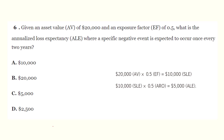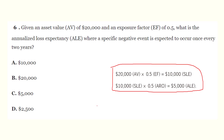Question 6: Given an asset value of $20,000 and an exposure factor of 0.5, what is the Annualized Loss Expectancy (ALE) where a specific negative event is expected to occur once every two years? The formulas are shown on screen. To calculate ALE, first find the SLE: asset value ($20,000) times exposure factor (0.5) equals $10,000. Then SLE ($10,000) times ARO (0.5) gives the ALE. The correct answer is $5,000.